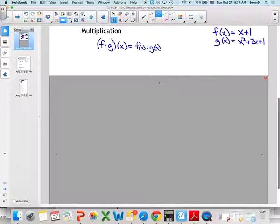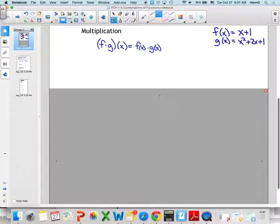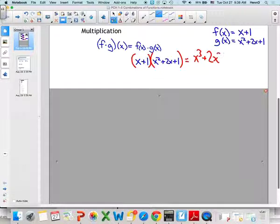Next, we've got multiplication. Notice here we have f times g of x, or f of x times g of x. Again, we'll use these same two functions, and what do we have to remember to do here? Distribute the whole thing. Yeah, distribute the entire thing. It's not technically foiling, because we have a trinomial, but that same principle. We have to multiply the x to everything in here, and the 1 to everything in here. So x times the x squared plus 2x plus 1. x cubed plus 2x squared plus x. Good.